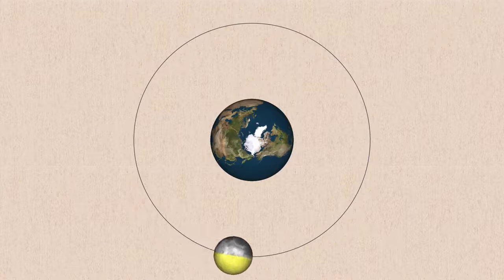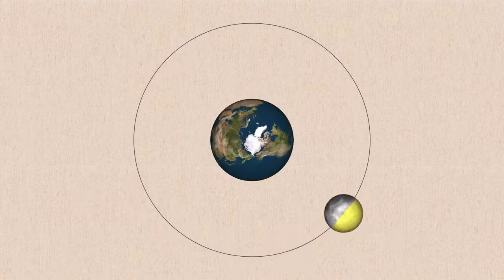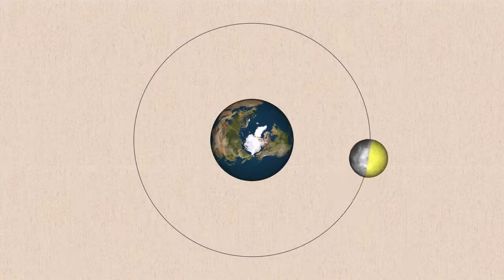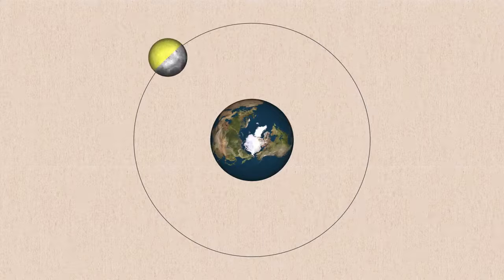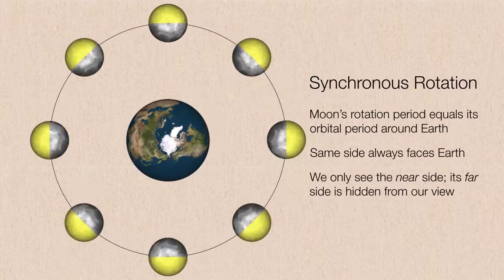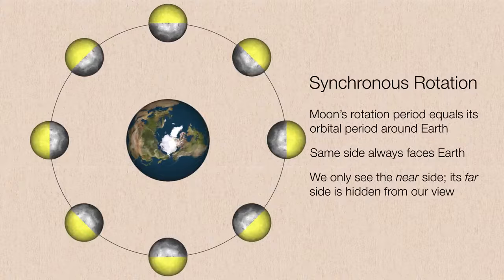You see that as the moon is revolving around the earth, the moon is also executing a single rotation on its axis. And this keeps the near side of the moon facing the earth throughout the entire lunar orbit. We call this type of rotation synchronous rotation, and it's for this reason that we always see the same side of the moon facing the earth. Therefore, the far side, by definition, is forever hidden from our view.